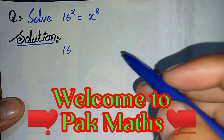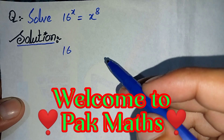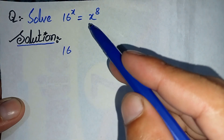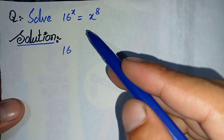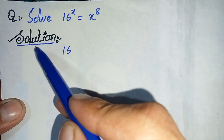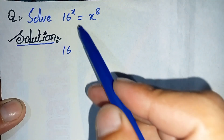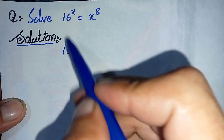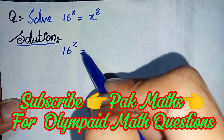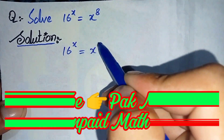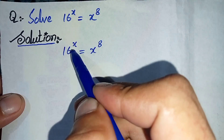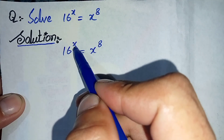Hello, welcome to ParkMas. In this video we will learn how to solve this viral exponential math problem. To solve any math problem properly, first we will write the solution and rewrite the question. The question is: 16 raised to the power x is equal to x raised to the power 8.